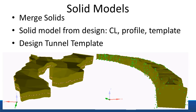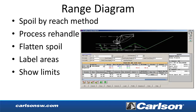For solid models in underground mining, there's a new Merge Solid command, and a way to design a solid by providing a centerline, profile, and template — along with a new Design Tunnel Template command. For the range diagram, there's a new method for doing spoil by reach. It also processes re-handle now, and includes a flattened spoil function with options to label areas and show dragline limits.